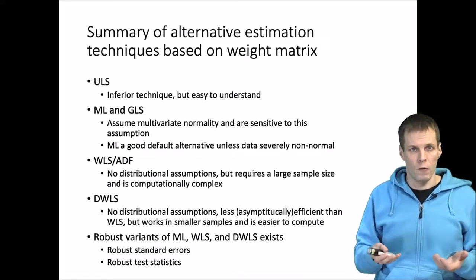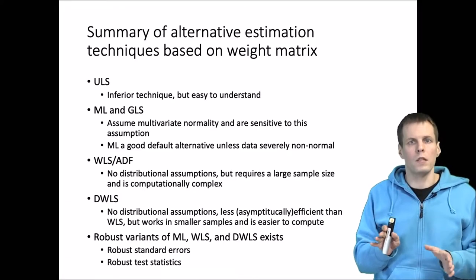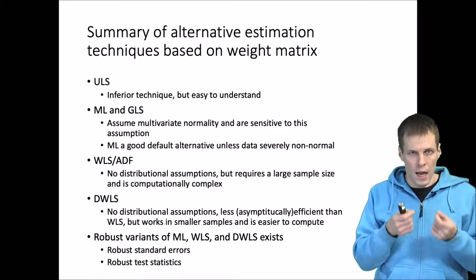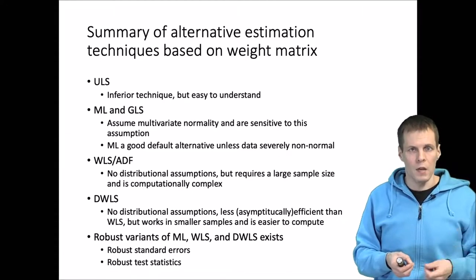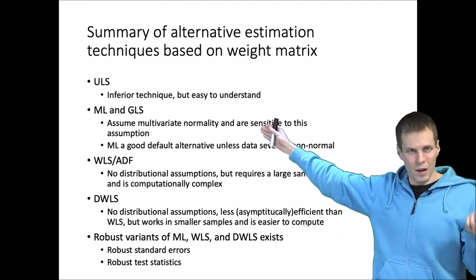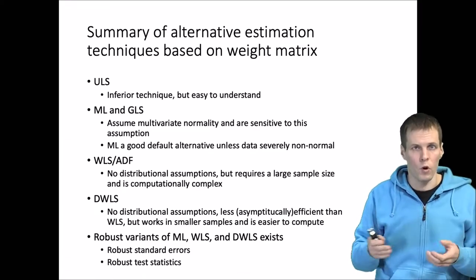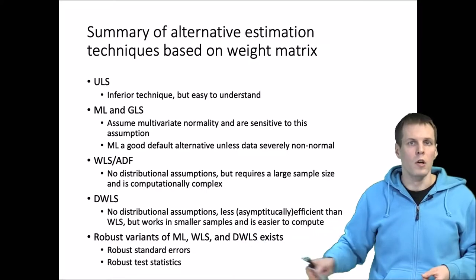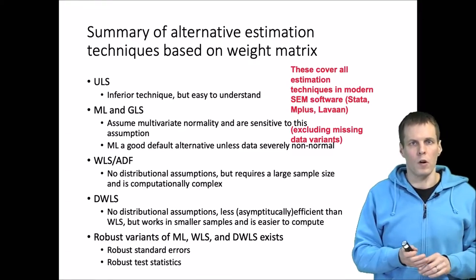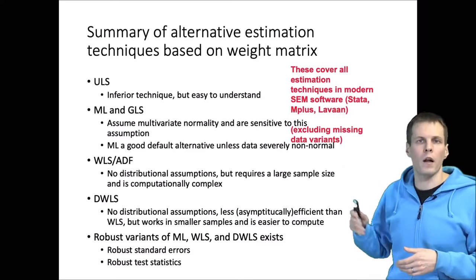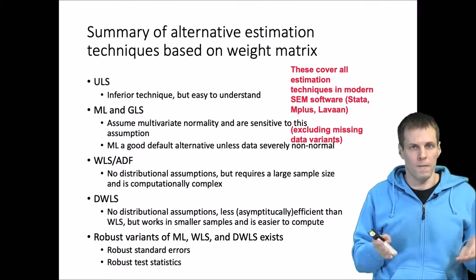There are also robust variants of all these techniques. In this context, 'robust' does not refer to the estimation itself but to estimating the standard errors in a robust way — similar to doing regression with robust standard errors, where the coefficients are the same. With MLR (robust maximum likelihood), the estimates are standard ML but the standard errors are calculated using the robust formula, and the chi-square test statistic also has similar robust variants. These techniques cover pretty much everything that major SEM software can offer including STATA, M+, or lavaan, except for some missing data procedures.